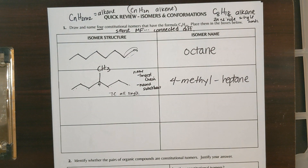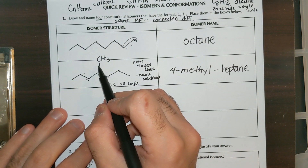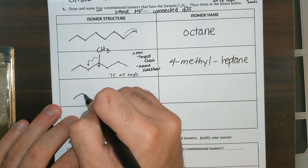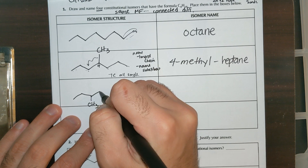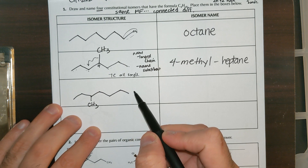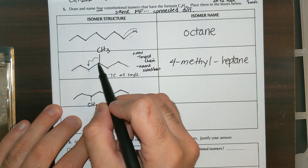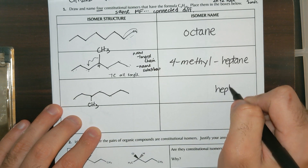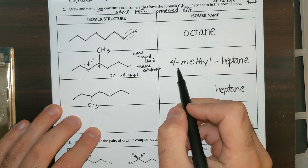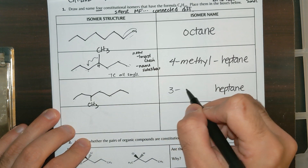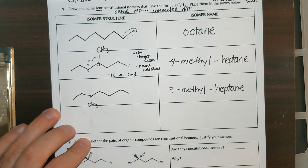I can just move that methyl group again — this time putting it on the third carbon and continuing the rest of the chain. This still gives me a parent chain of 7 carbons, so the parent name is still heptane. Now the methyl group is on carbon 3, making this 3-methylheptane.